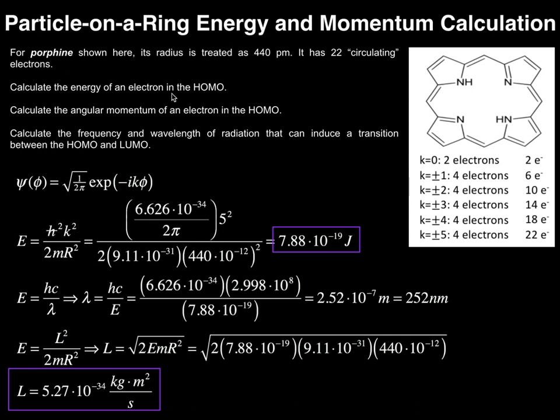We want to calculate the energy of an electron in the highest occupied molecular orbital, or the HOMO, and then calculate its angular momentum. How do we do this? We have to know the energy level of the HOMO, and to do that, we need the magnetic quantum number K, but it's not given. So how do we determine that?